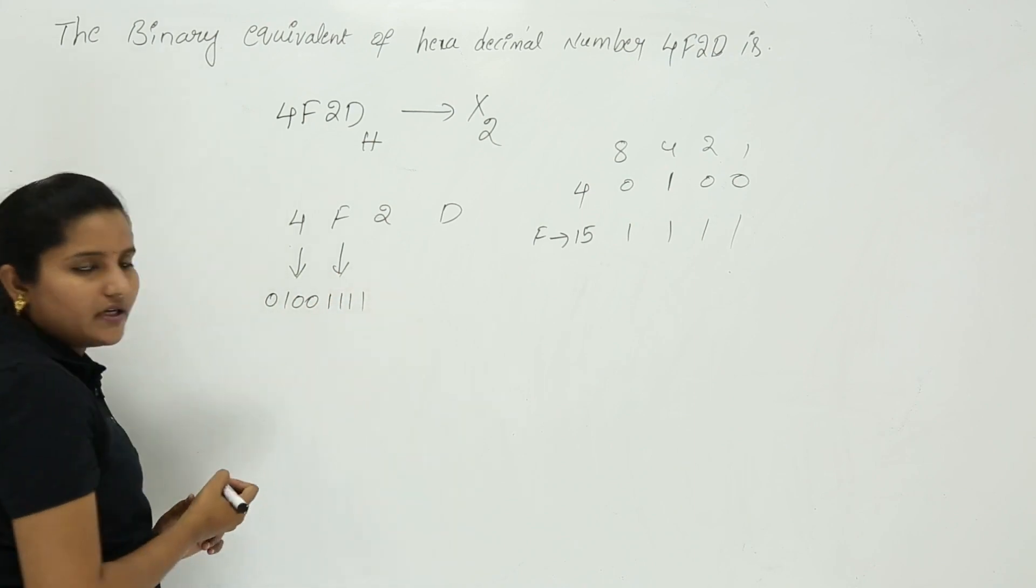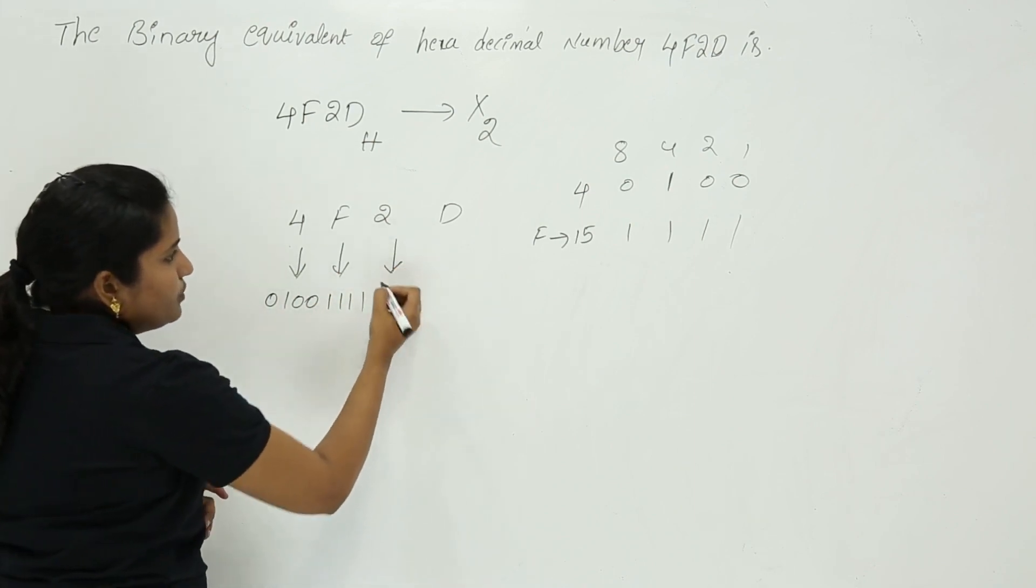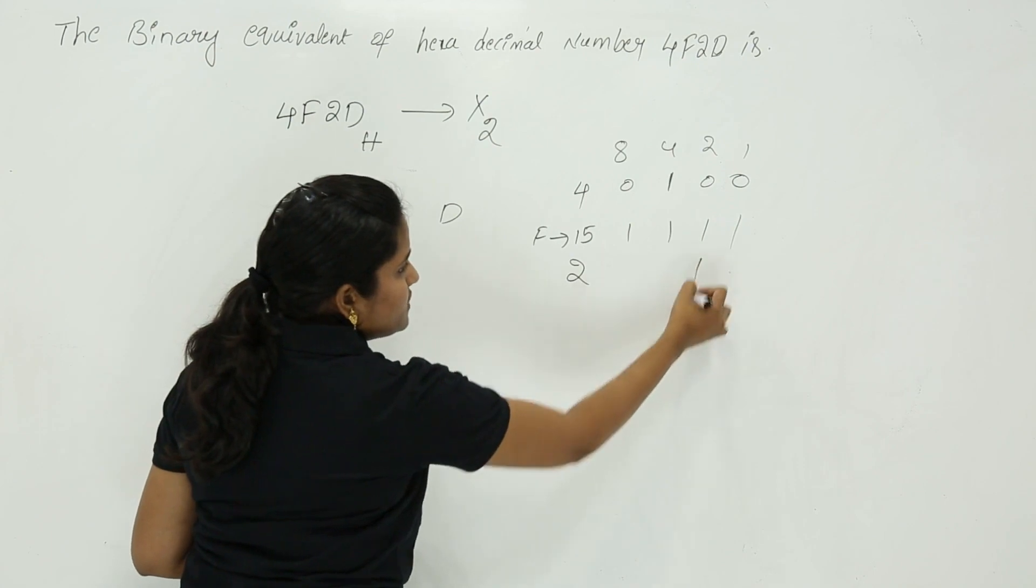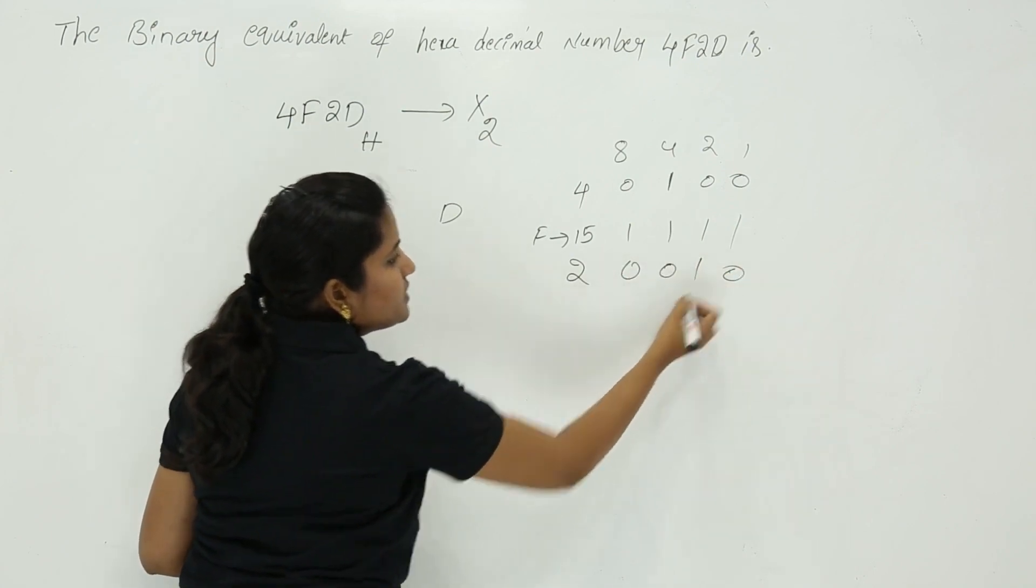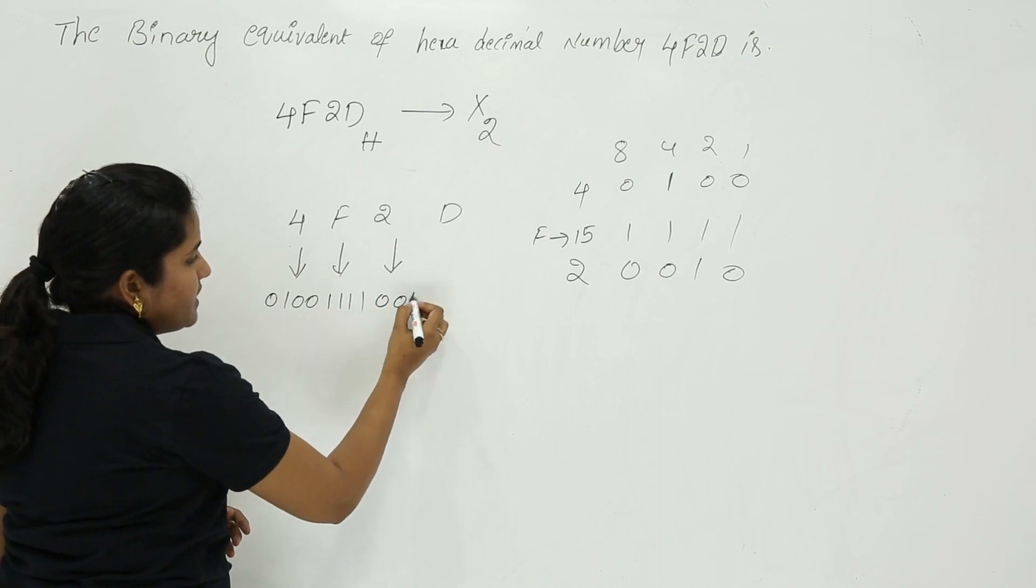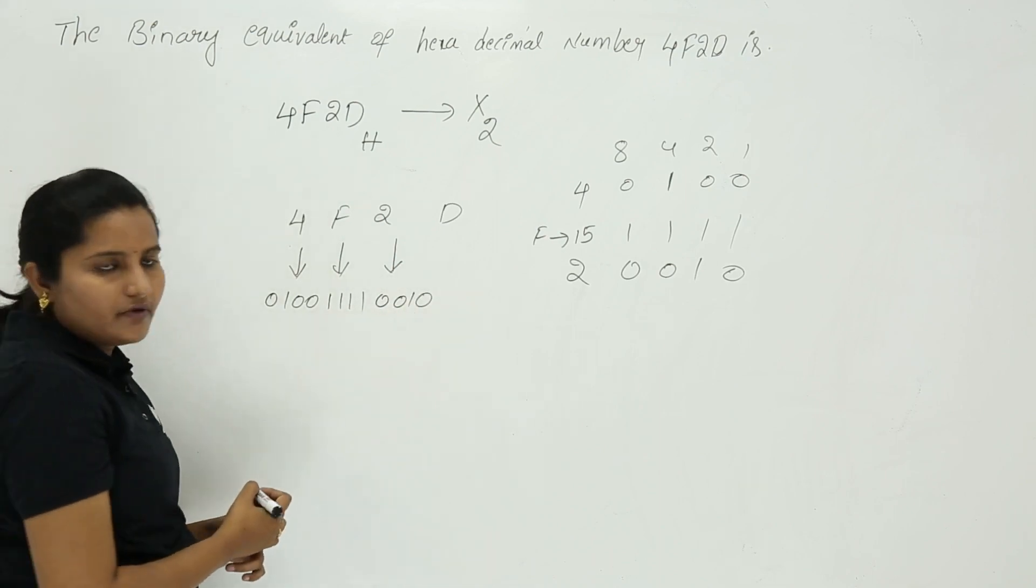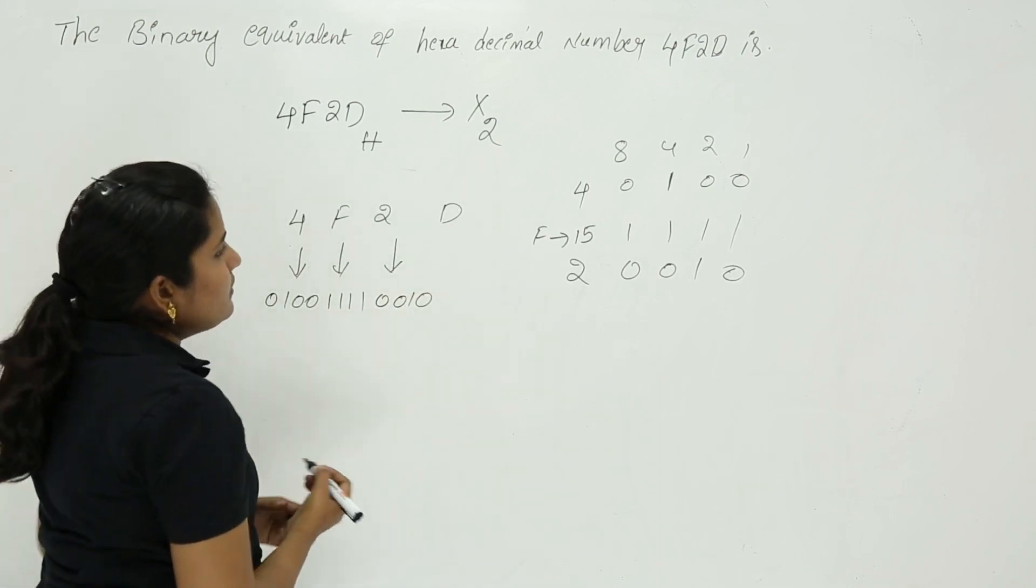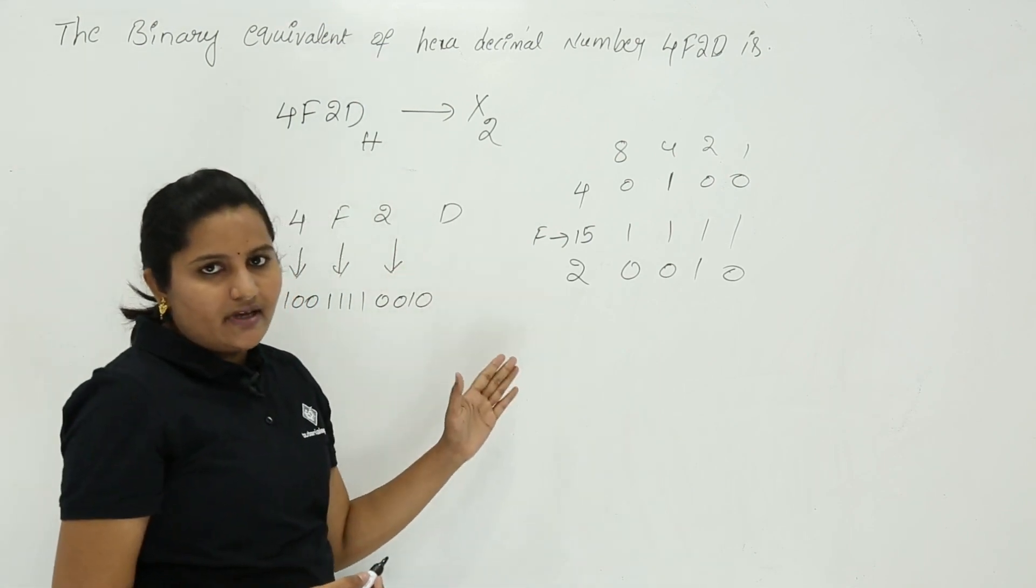For 2, to make 2, only the 2 place is required; remaining places are 0. So 0010 is the binary for 2.